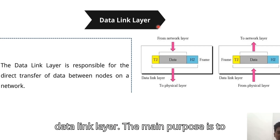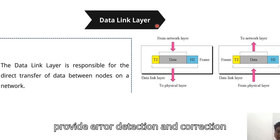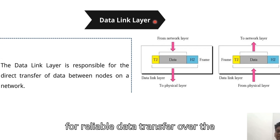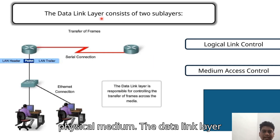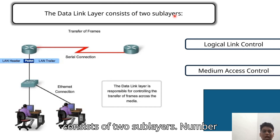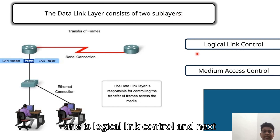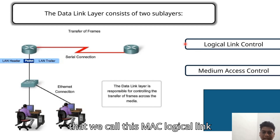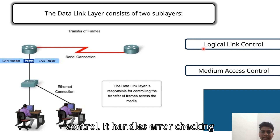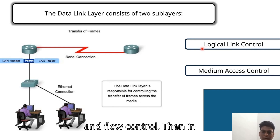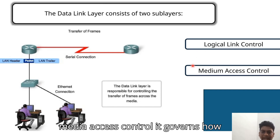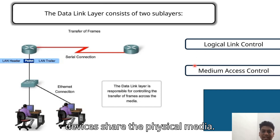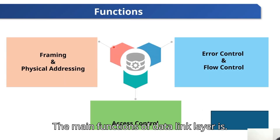The Data Link layer's main purpose is to provide error detection and correction for reliable data transfer over the physical medium. It consists of two sub-layers: Logical Link Control (LLC), which handles error checking and flow control, and Media Access Control (MAC), which governs how devices share the physical medium.